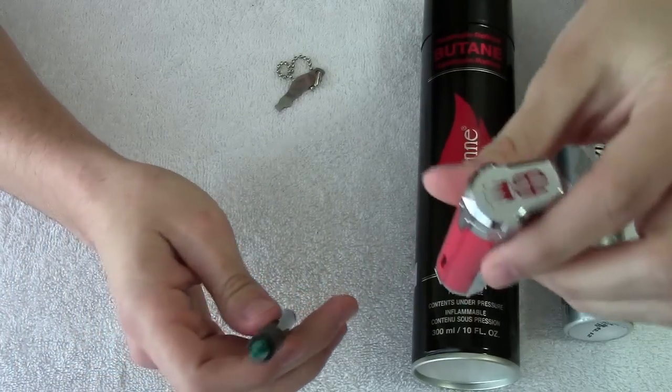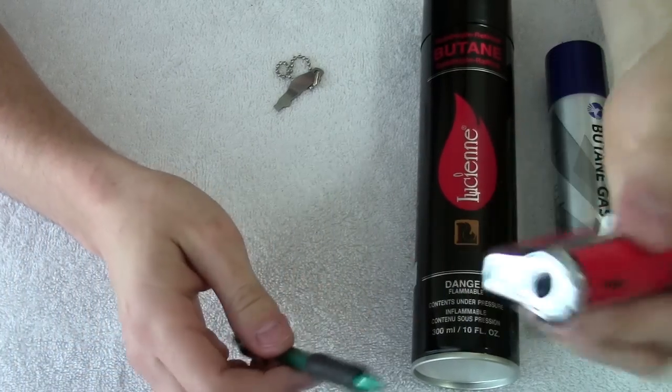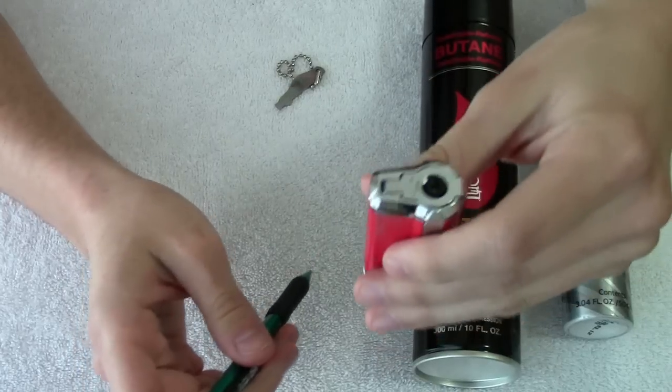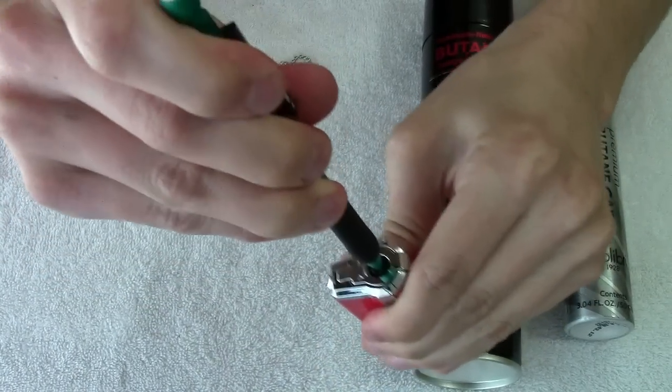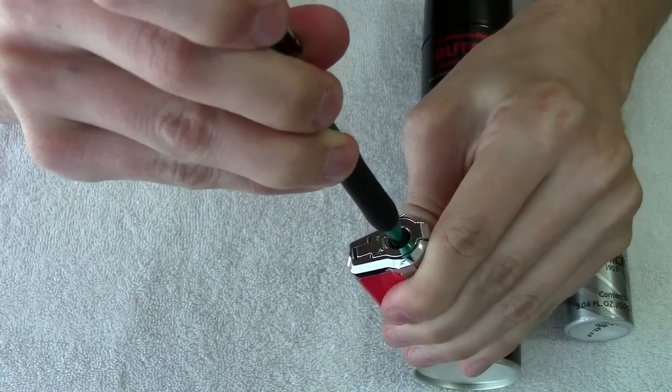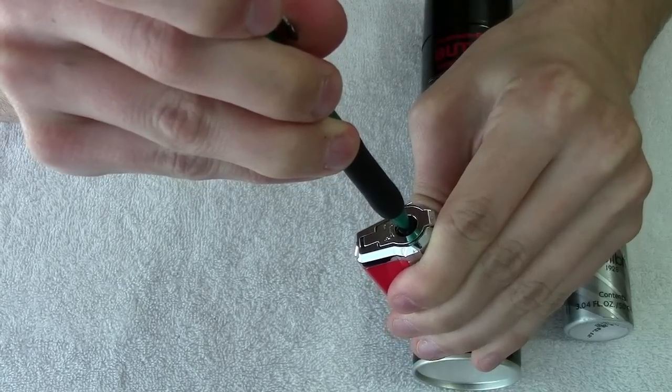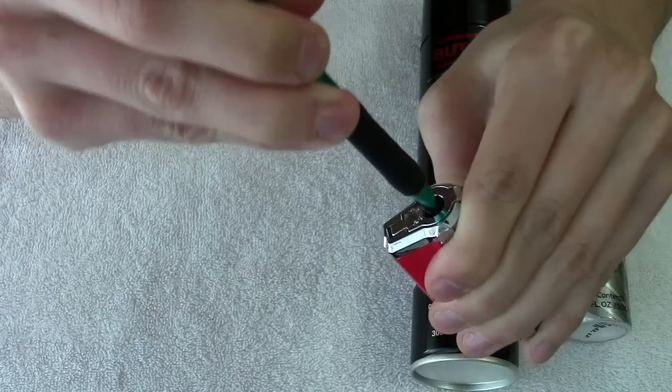Basically you're going to empty it. You want to turn it the way you're going to fill it, which is going to be this direction facing down. And then I'm just going to push down on that valve. As you can see it let out a lot right away. Hold it and it kind of goes away. But then I just want to give it a few bumps.